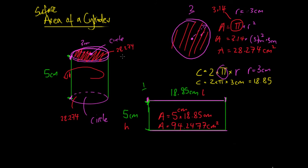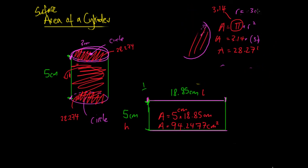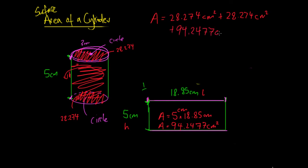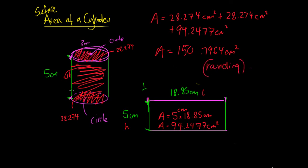So we know the top has an area of 28.274 cm², the bottom has an area of 28.274 cm², and the middle section has an area of 94.2477 cm². To work out the total surface area we just add all three together: 28.274 + 28.274 + 94.2477, giving us roughly 150.7964 centimeters squared. This might be slightly out due to rounding, but that's the general process for calculating the surface area of a cylinder.